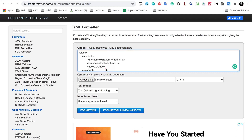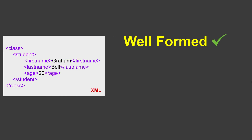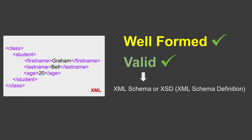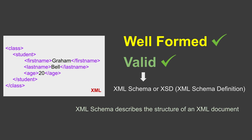So here we have a well-formed XML. Now an XML can also be valid. When an XML is checked against a schema — which is XML schema, also called XSD, that is XML Schema Definition — then we say it is a valid XML. XML schema describes the structure of an XML document and is also written in XML. In a moment I will create a XSD for this XML and you will understand how XML schema or XSD works.